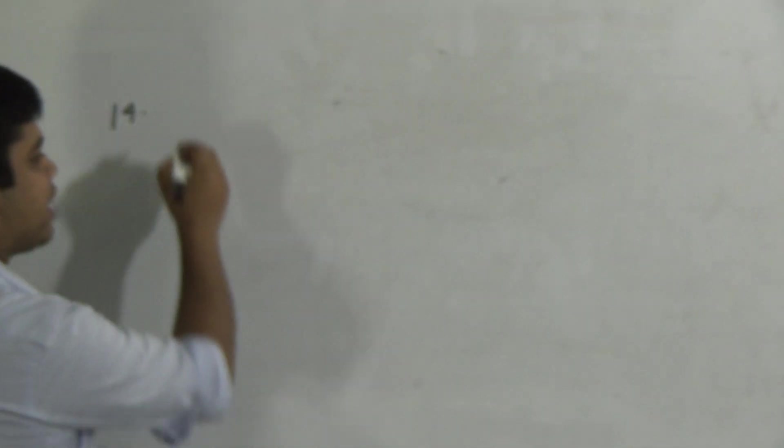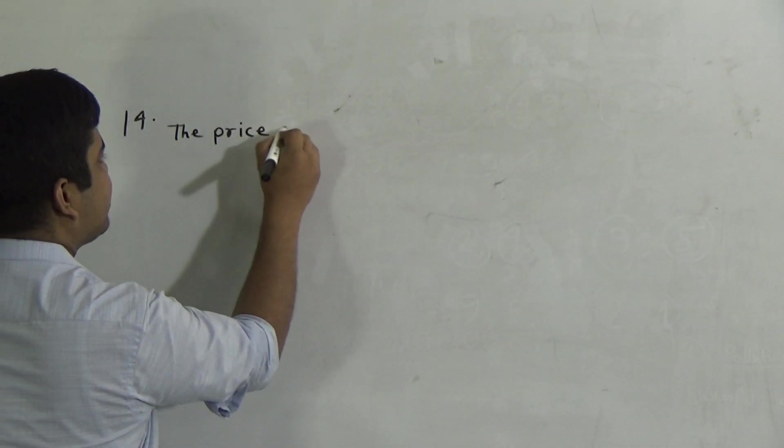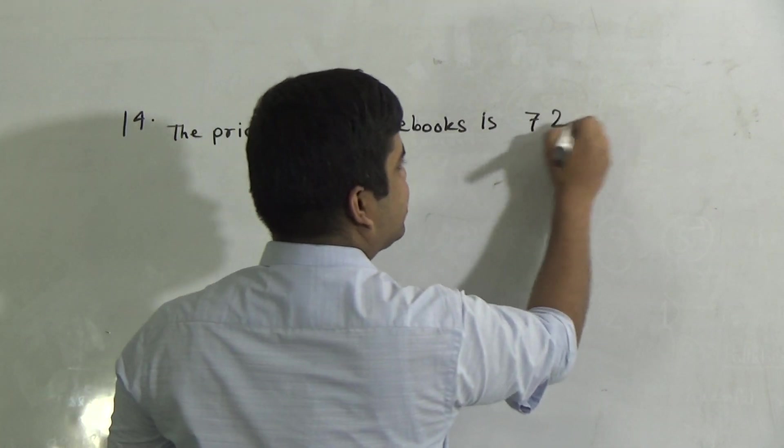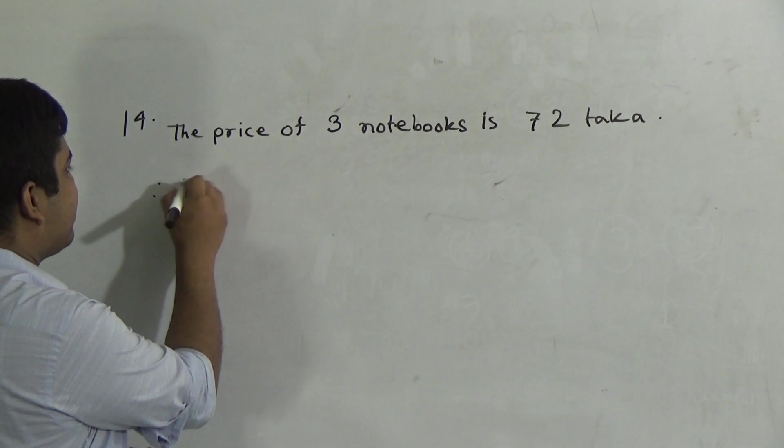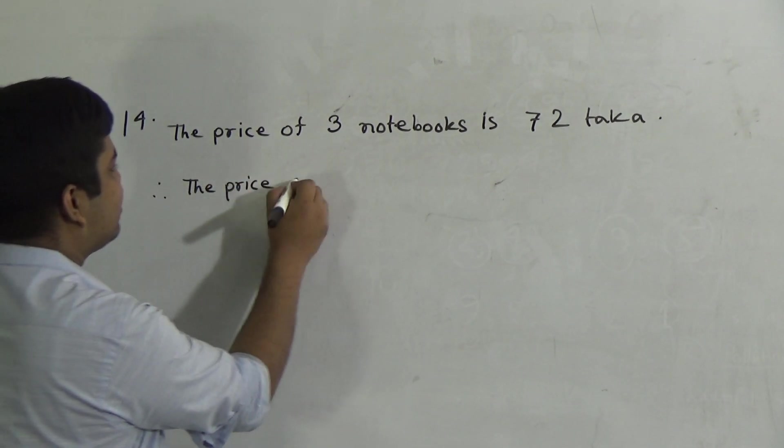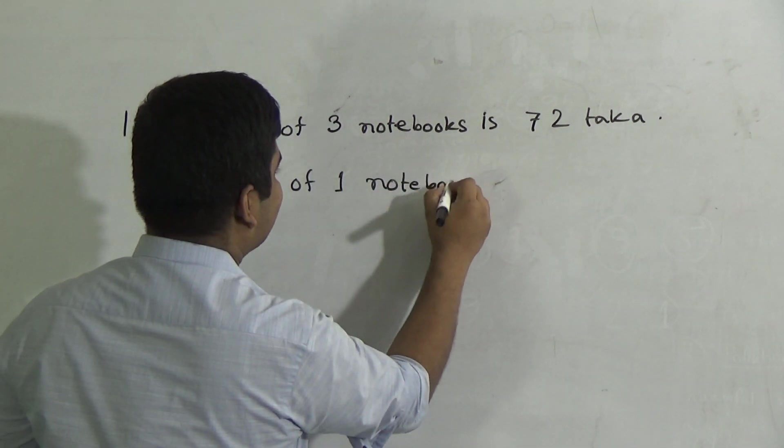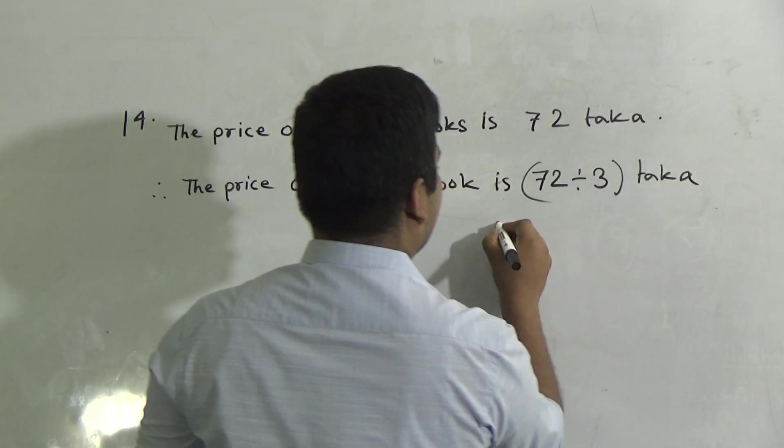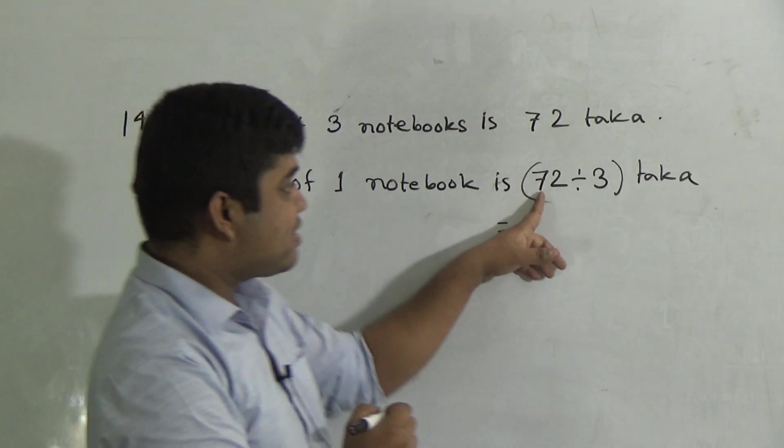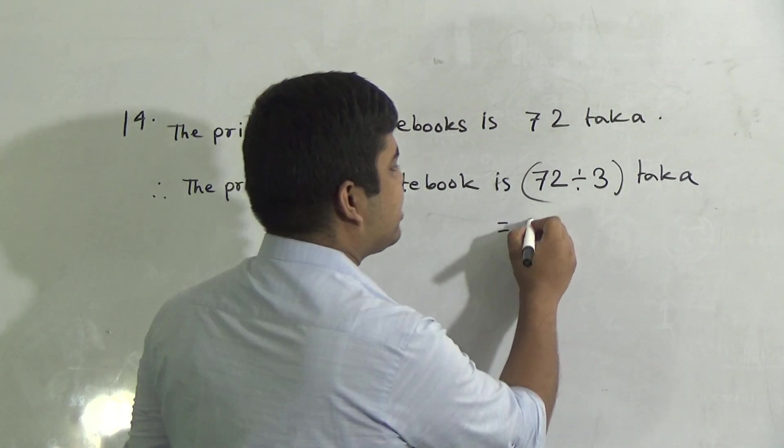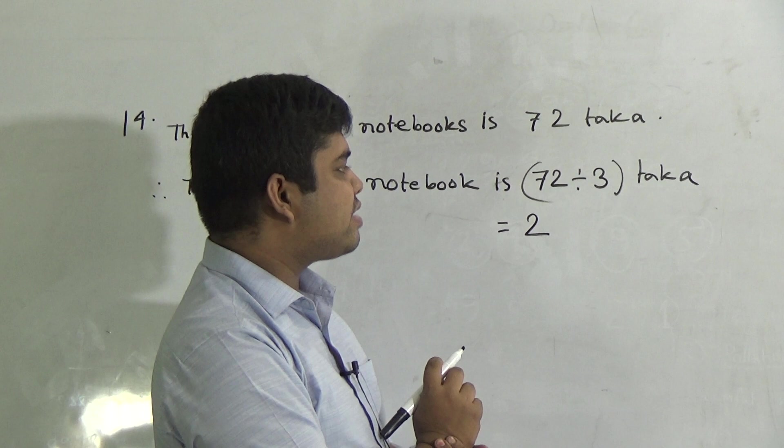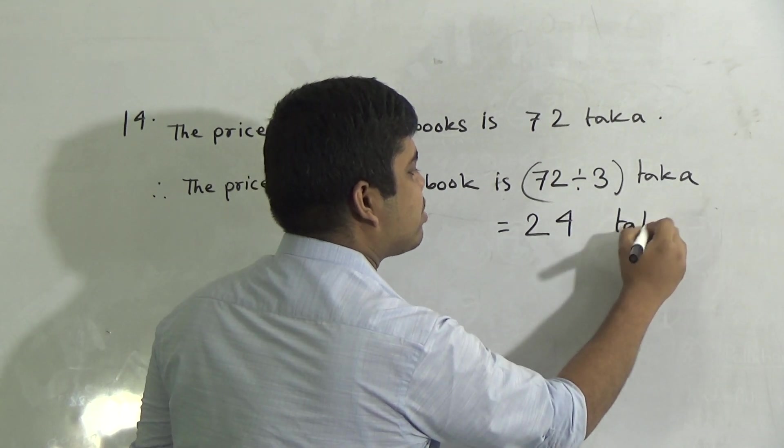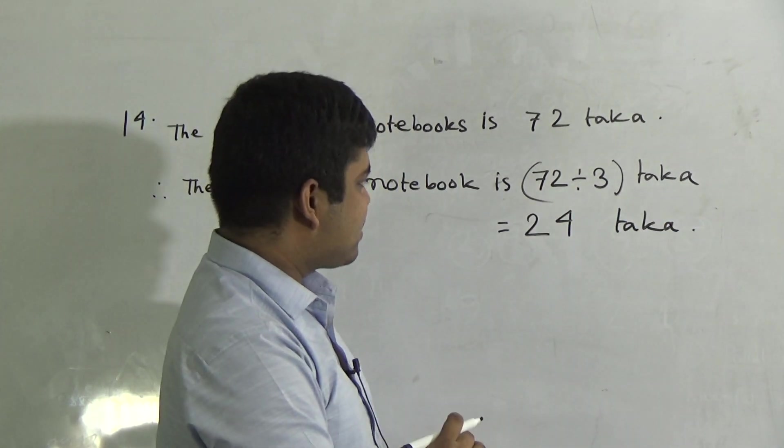Now we shall do 14 number question. So, first of all, we write the price of three notebooks is 72 taka. Therefore, we can write the price of one notebook is 72 divided by 3 taka. My dear students, now we do division. In 7, 3 goes in how many times? 3 goes in 2 times. That means 3 twos are 6. Then if I subtract 6 from 7, then I get 1. That means 12. In 12, 3 goes in how many times? 4 times.